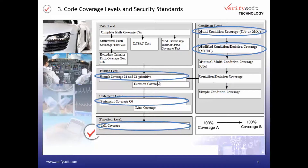Branch coverage shows which branches within the statements have been tested. The highest coverage levels requested by safety standards are shown on the right side of the picture, where each condition needs to be tested. A very important coverage level for safety-critical development is MCDC coverage — Modified Condition Decision Coverage.